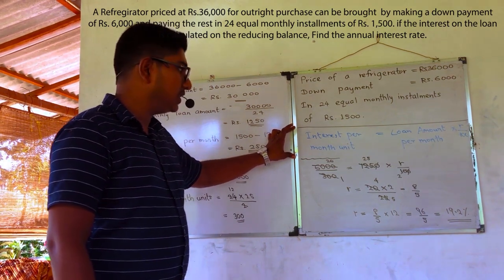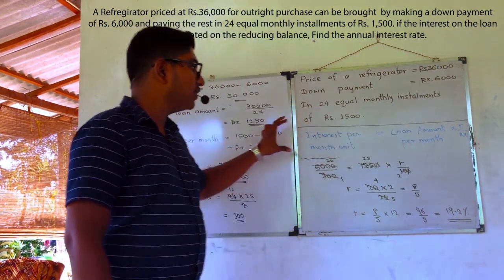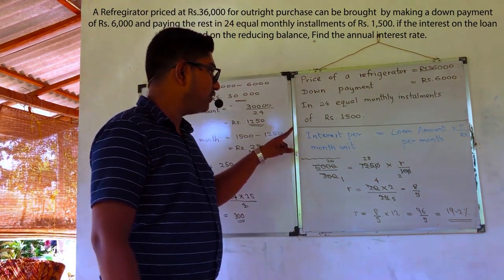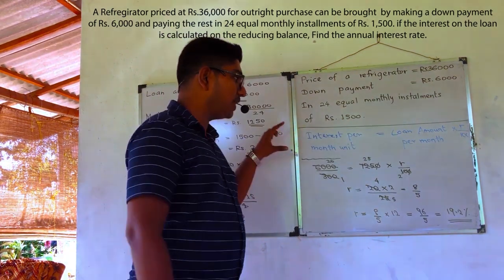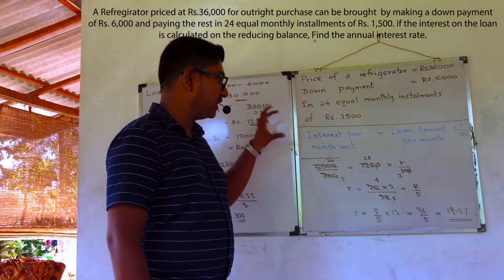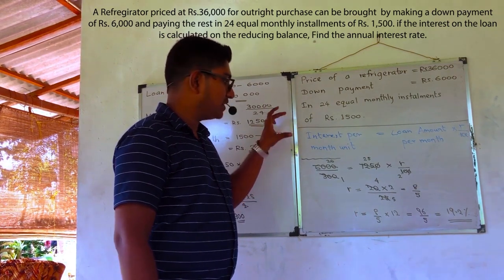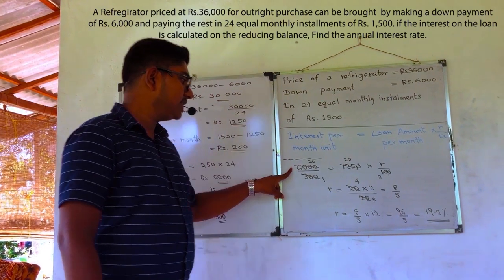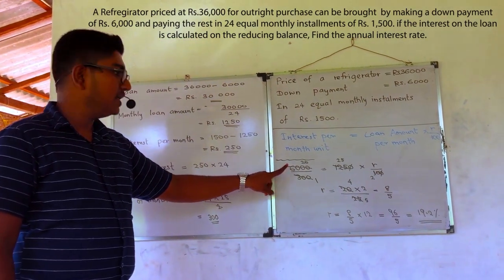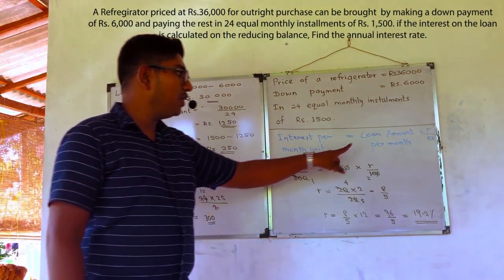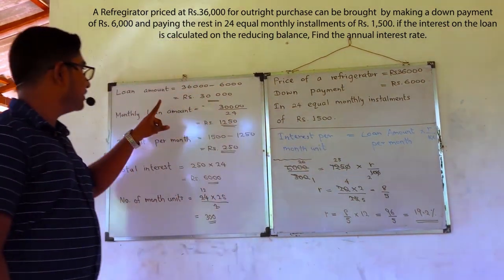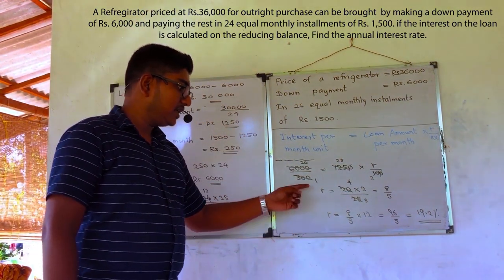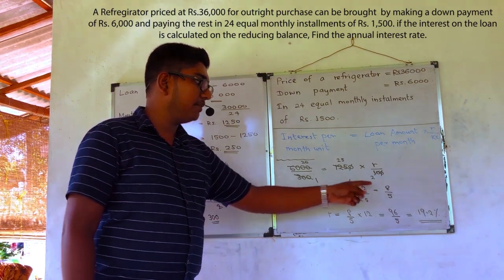I want to emphasize this equation. If we want to calculate the annual interest rate in reducing balance method questions, you have to memorize this equation, but you cannot apply it directly on your answer sheet. Keep this equation in mind and substitute the relevant values. Interest per month unit equals total interest divided by number of month units, and loan amount per month multiplied by R over 100. After doing this simplification, you will get the monthly interest rate, and after multiplying by 12, you will get the annual interest rate.